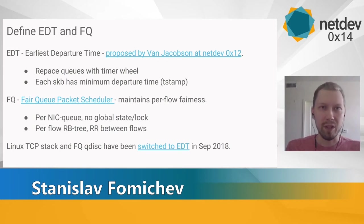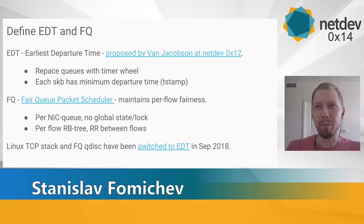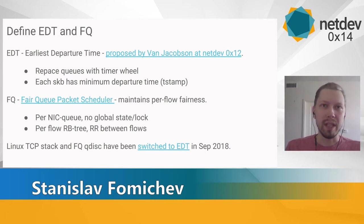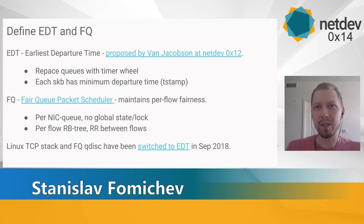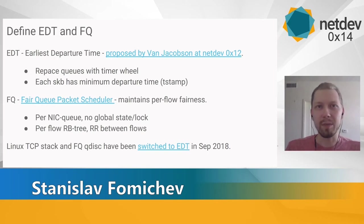The next term is FQ, for Fair Queue. It's a queuing discipline added to the Linux kernel by Eric Dumazet. An independent FQ instance is usually created for each hardware NIC queue, and FQ tries to fairly distribute the available networking bandwidth between multiple TCP flows. An important note is that compared to global HTB, there is no global FQ, and hence no global QDisc lock. For our purposes, FQ behaves like a timing wheel scheduler — it doesn't send out a packet until its earliest departure time is met.